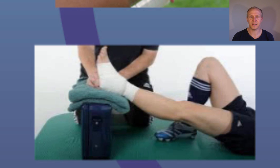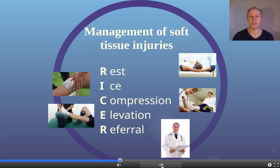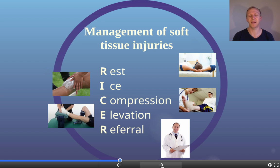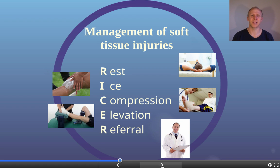You need to elevate the injured site above your heart — if you injure your ankle, get it above your heart; same for a wrist. Elevation helps with blood drainage and prevents fluid pooling in the area, which decreases inflammation. Finally, it's important that the person is referred to see a GP, physiotherapist, or someone who can diagnose and assess the injury, check it's not a grade three tear or sprain, minimise scar tissue, prevent secondary damage, and guide the athlete's return to play.